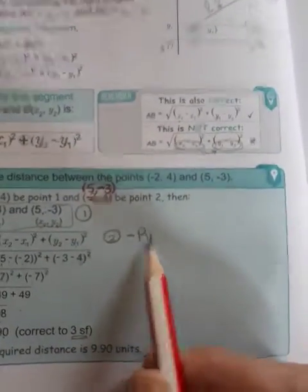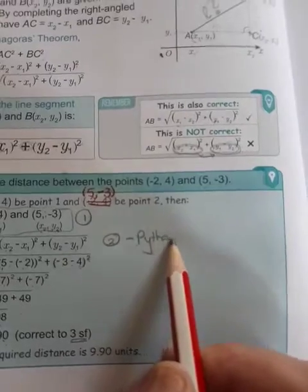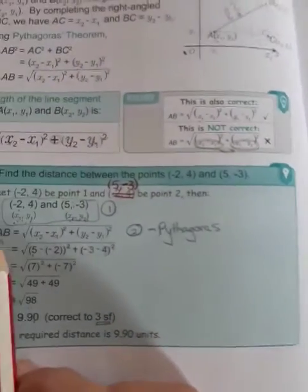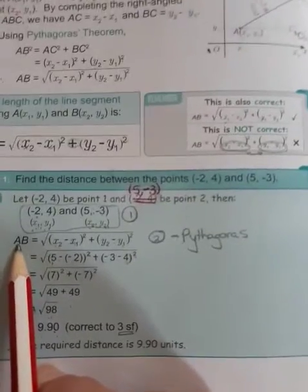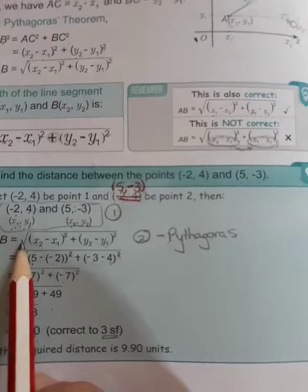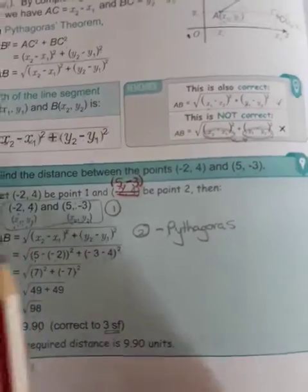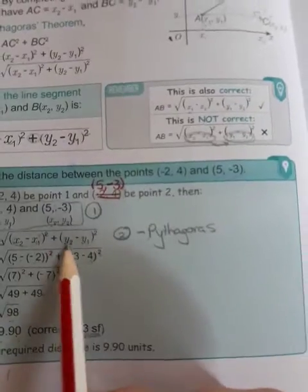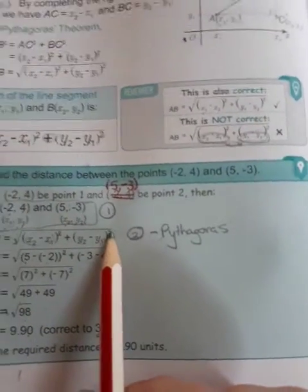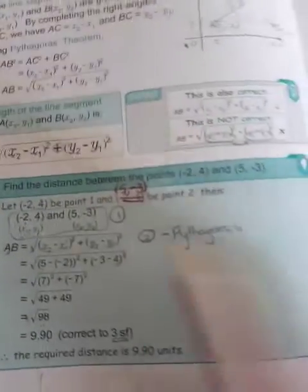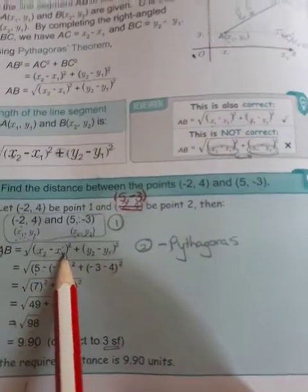Remember, this formula comes from Pythagoras. Pythagoras really is the longest side squared. In this case, it's not squared because we've taken the square root there. Then we have a short side squared plus another short side squared. And the way you calculate the shorter sides is by subtracting the relevant coordinates.